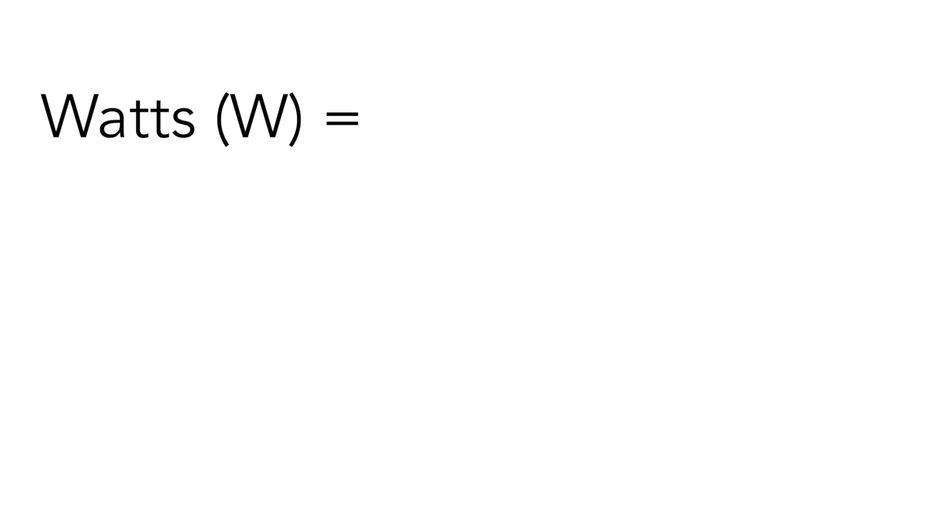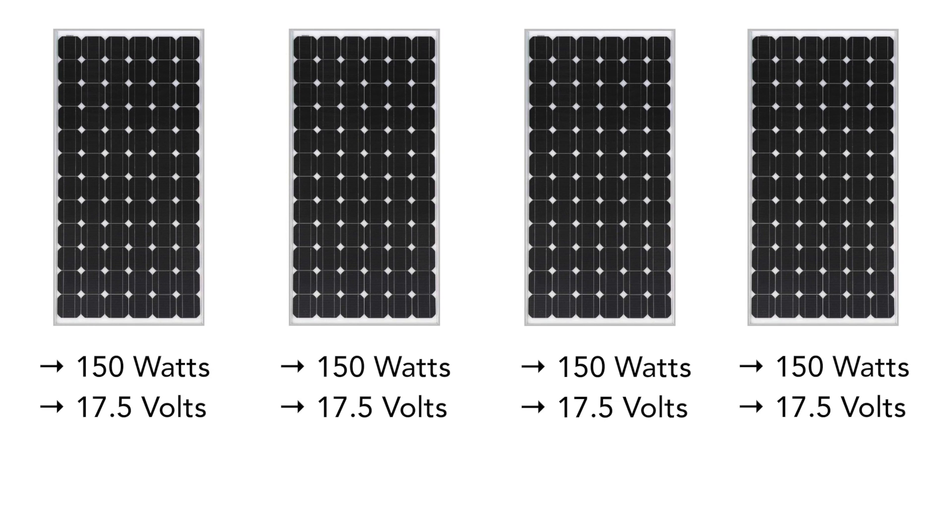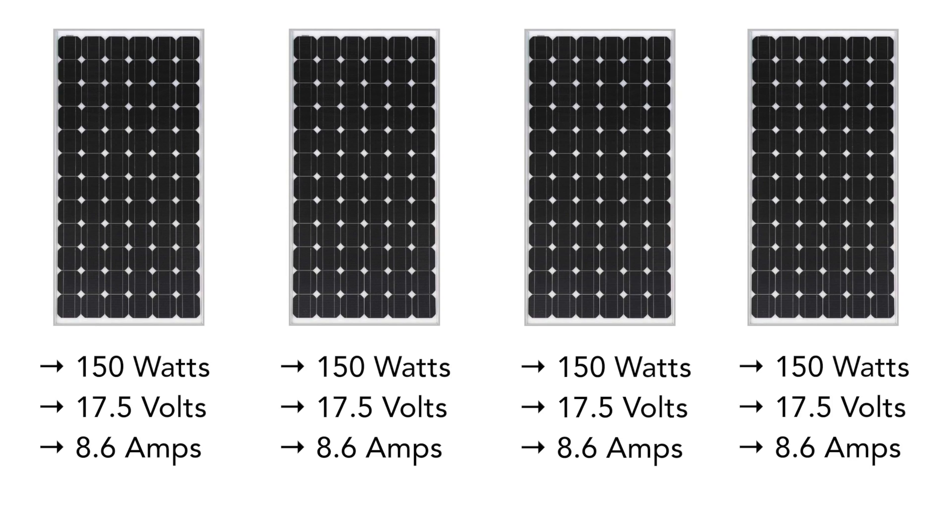Now we're going to jump into the final topic, which has to do with wiring solar panels in series and/or parallel. This topic can be extremely confusing and my goal is to make it as clear and easy to understand as possible. Before we jump in, I want to refresh our minds on the relationship between watts, volts, and amps. As discussed in the previous video, watts equals volts times amps. This equation is going to be very important as we go through our scenarios. I'm going to use our personal system as a reference: we have four 150 watt panels for a total 600 watt solar array, at 17.5 volts, giving us about 8.6 amps of current on each panel.